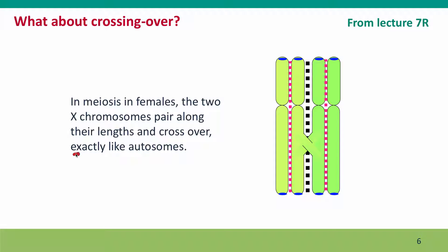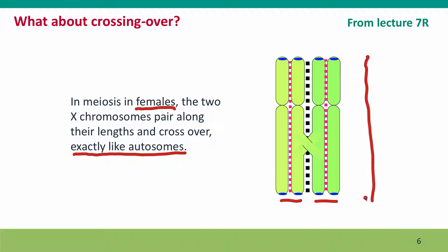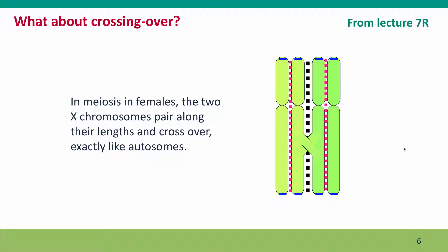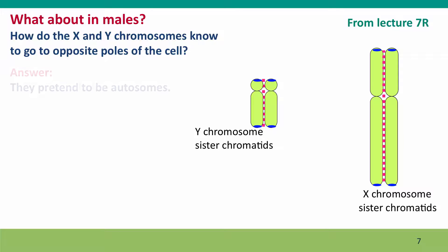In the very last lecture of Module 7, we talked about how meiosis happens differently for sex chromosomes. The first thing we said was that it doesn't happen differently for the X chromosome in females — females have two X chromosomes and they pair exactly like autosomes and cross over exactly like autosomes. So we expect that the frequency of X chromosome aneuploidies arising from errors in the mother would be similar to that of aneuploidies for any other autosome of similar size, which is fairly low.